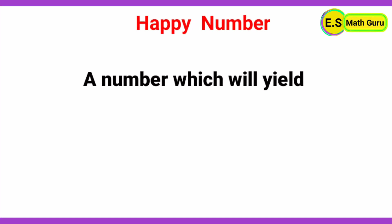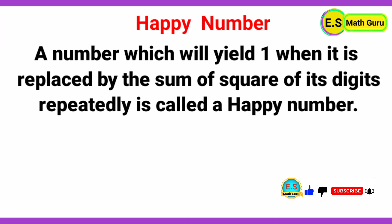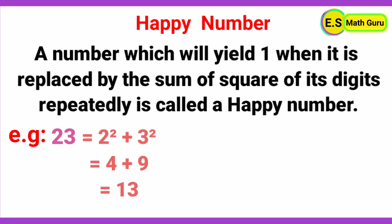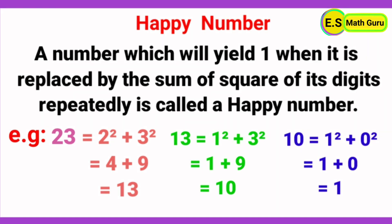Next, happy number. A number which will yield 1 when it is replaced by the sum of squares of its digits repeatedly is called a happy number. For example, 23: 2² + 3² = 4 + 9 = 13. Then 1² + 3² = 1 + 9 = 10. Then 1² + 0² = 1 + 0 = 1. Therefore, 23 is a happy number.